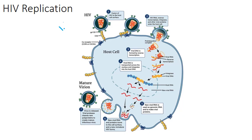The first step I'm going to cover is attachment. The virus is going to attach to two receptors. The first one is CD4, and that's going to be bound by GP120. Then there's a co-receptor that also binds to GP120. Early in infection, it's M-tropic and it'll be CCR5. Later, it's T-tropic and will be CXCR4.